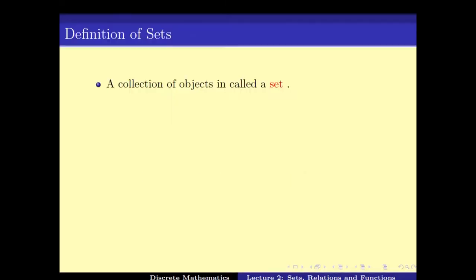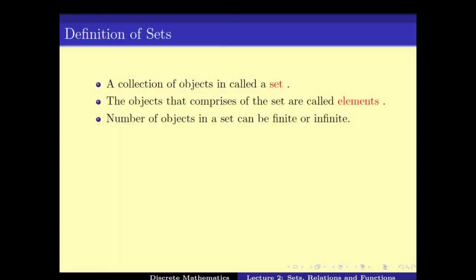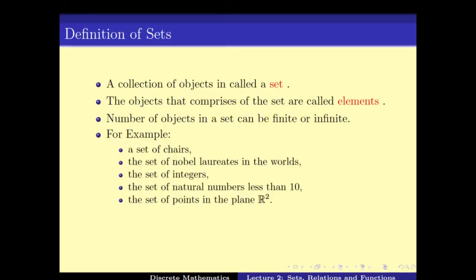Let's start with the definition of sets. What is a set? Any collection of objects is called a set. The objects that comprise the set are called the elements. The number of objects in the set can be finite or infinite. For example, the set of chairs, the set of Nobel laureates in the world, the set of integers, or the set of natural numbers less than 10.